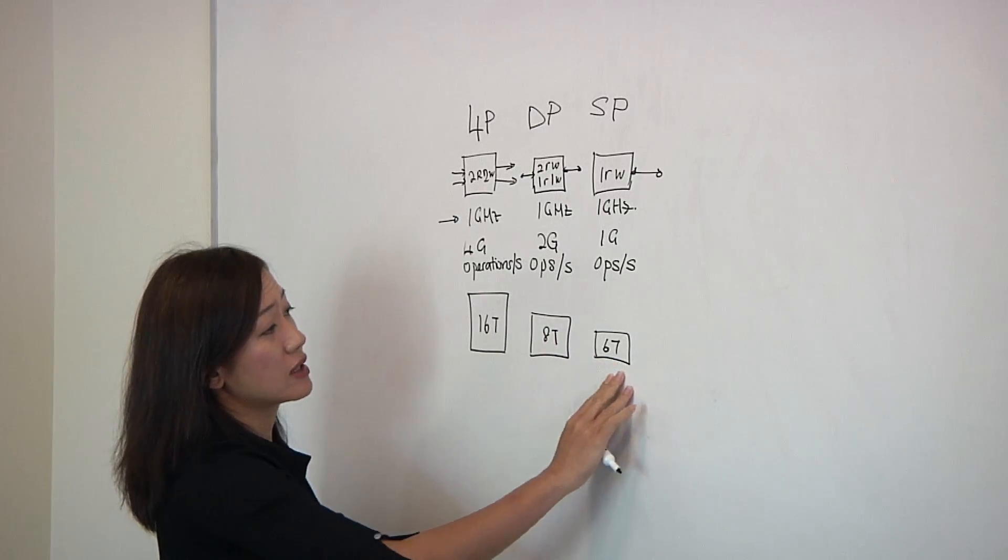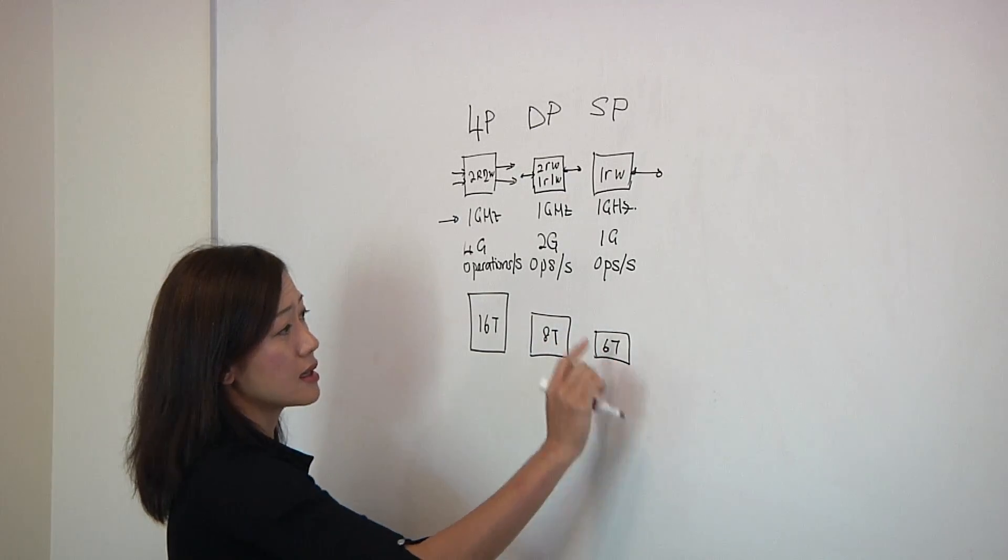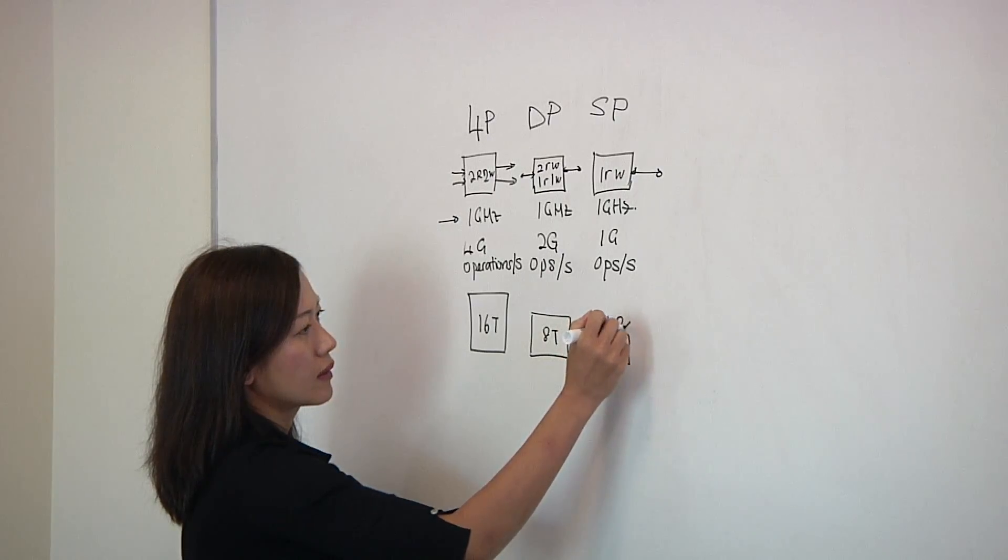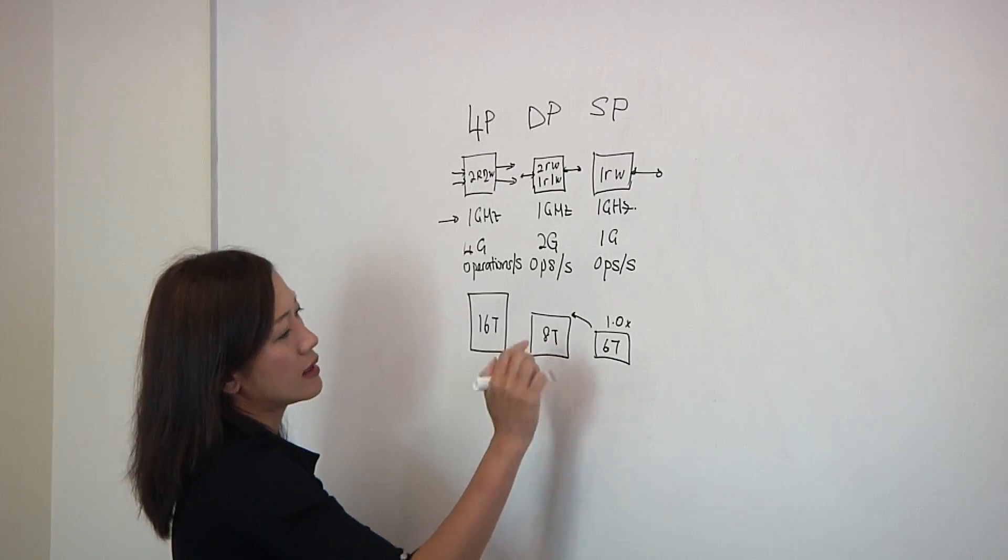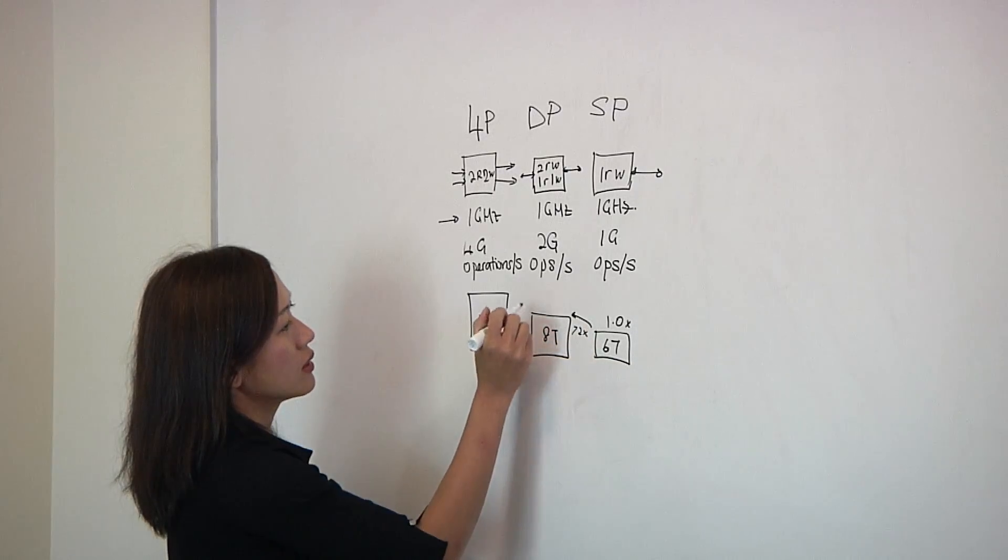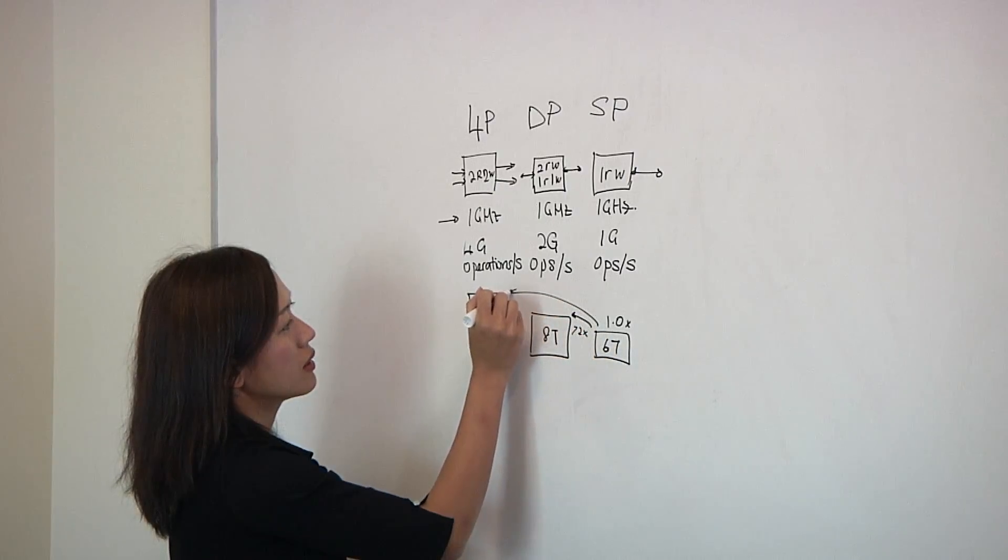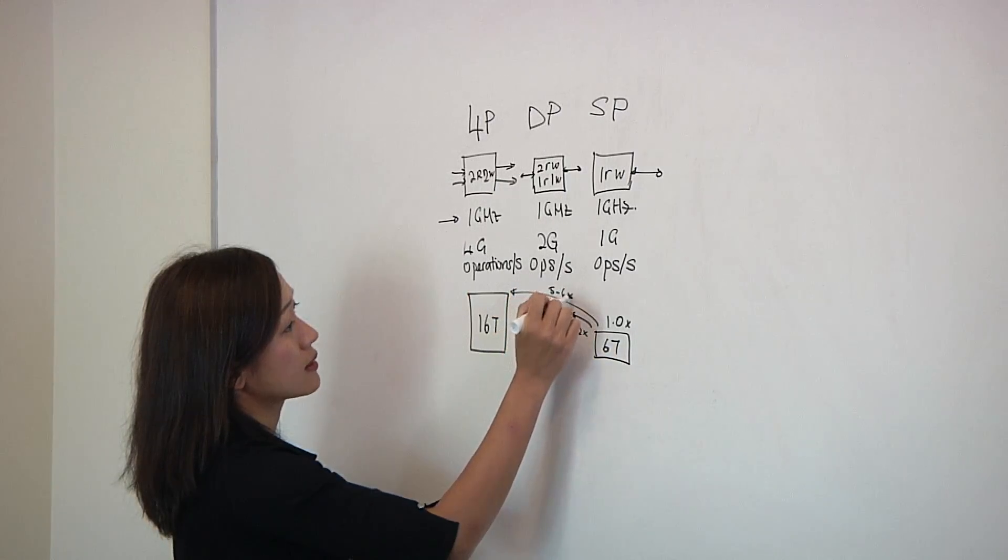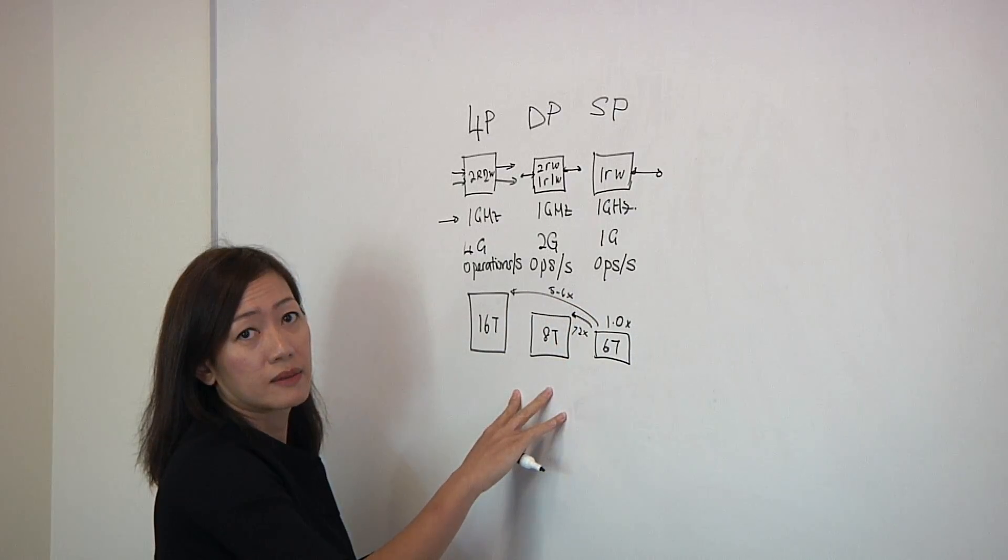If you look at the size comparison, let's say we take the 6T bit cell as a reference. The size difference between the 6T to the 8T is typically about 2x, and then from here to here is maybe about 5 to 6x of the size.